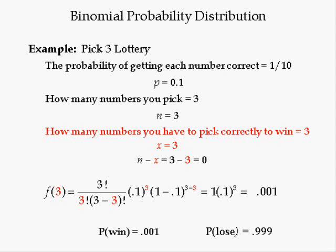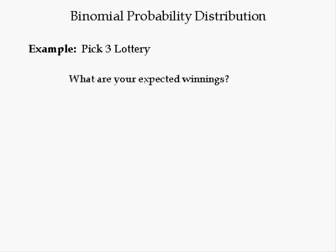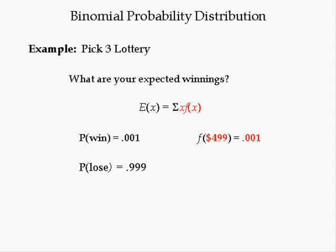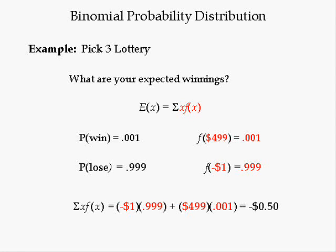Hence, the probability you win is 0.001, but the probability you lose is 0.999. To compute your expected winnings, you add the product of how much you lost and its probability to how much you win and its probability. The probability of winning is 0.001, so F of $499 equals 0.001. The probability of losing is 0.999, so F of minus $1 equals 0.999. Your expected winnings are minus $1 times 0.999 plus $499 times 0.001, which equals negative 50 cents. If you buy 20 tickets a week on average, you are losing $10 a week — an additional voluntary tax of $520 a year.